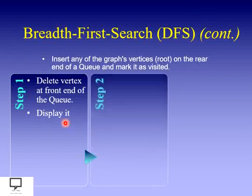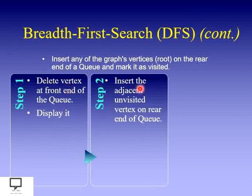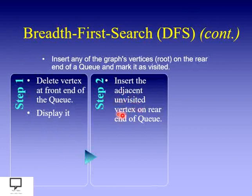The second step is: for the vertex deleted in step one, insert all its adjacent but unvisited vertices at the rear end of the queue. Whenever you delete a vertex, find all its adjacent unvisited vertices, insert them into the queue, and simultaneously mark them as visited.